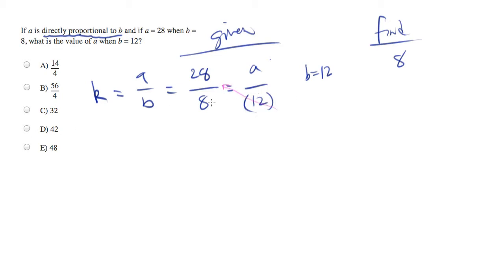Now the standard method of solving this is typically cross-multiplying. And what we'll end up with is 12 times 28 equals 8A. Let's divide both sides by 8.